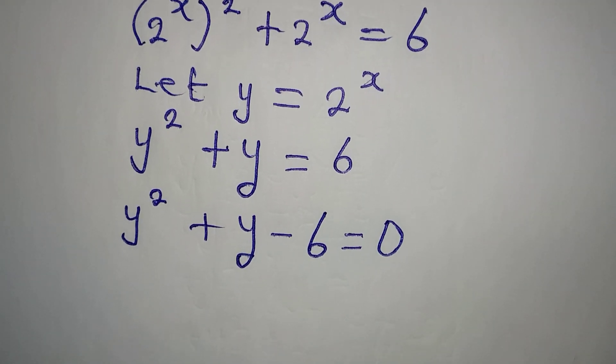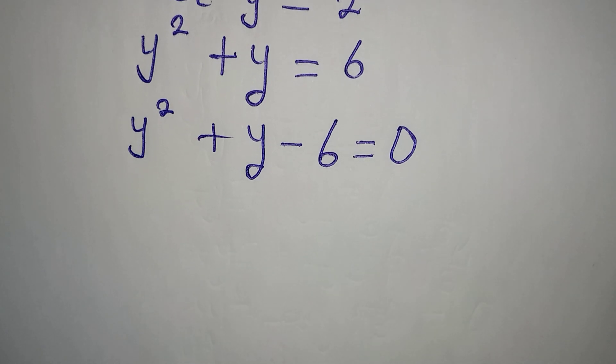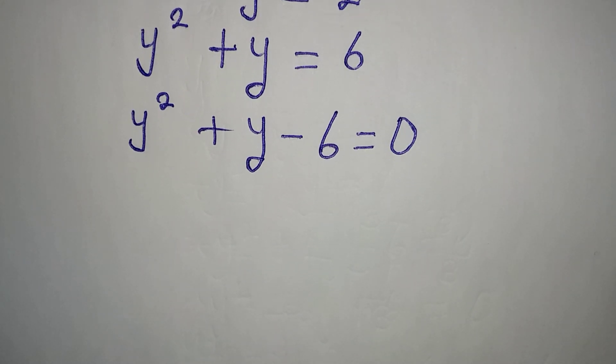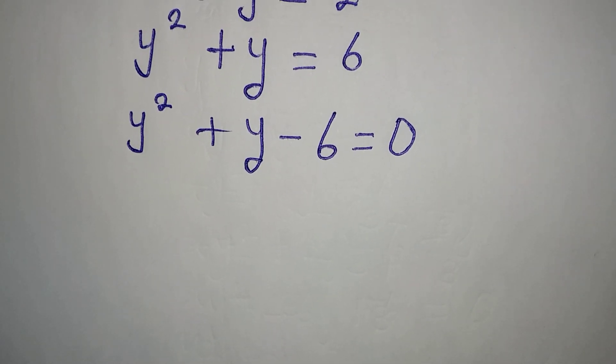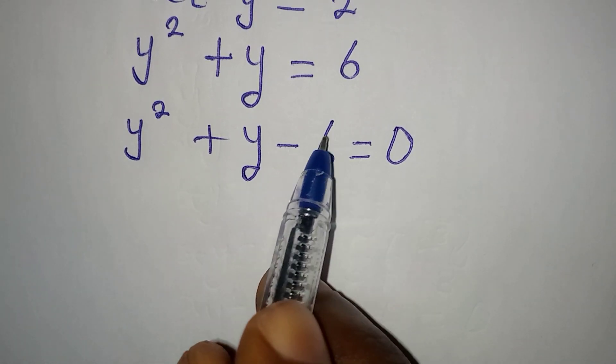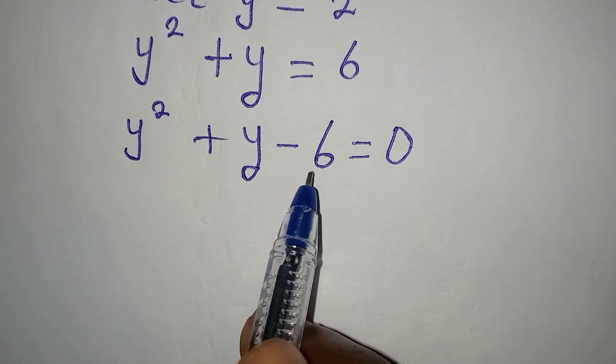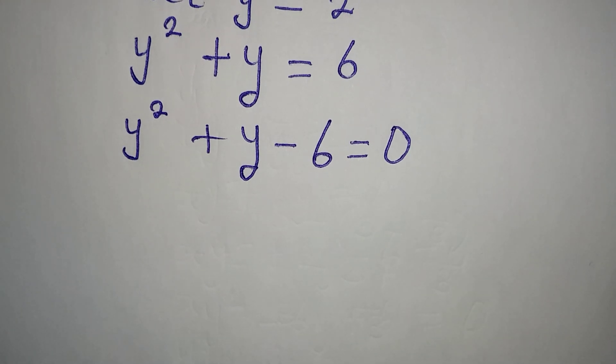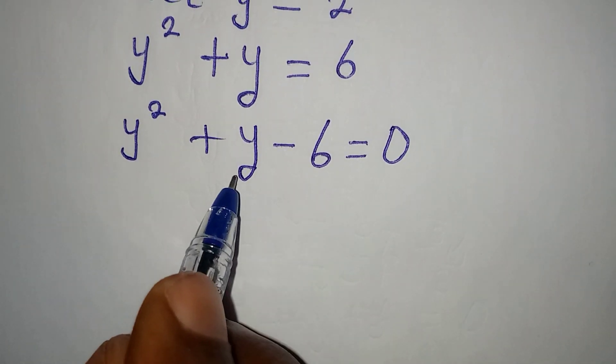Now we will be thinking, how do we deal with this? Can we use factorization method for this? Let's try. If we are going to use factorization method, remember, two numbers we multiply to get minus 6. And we put them together, or we add them to get 1.